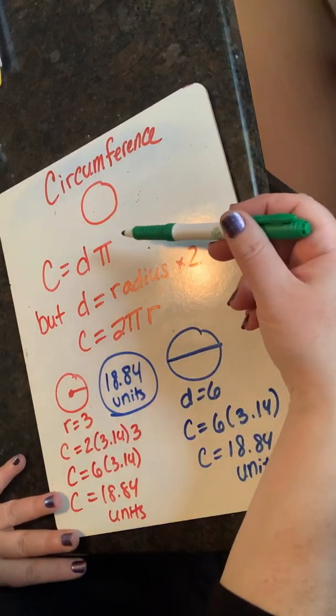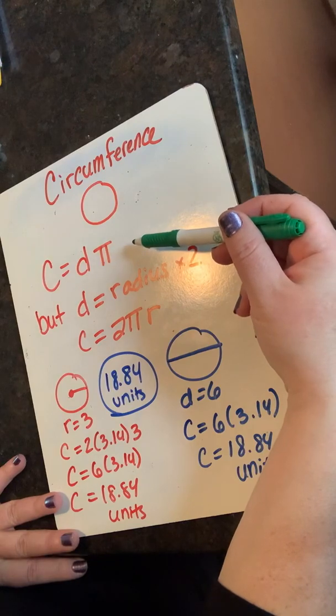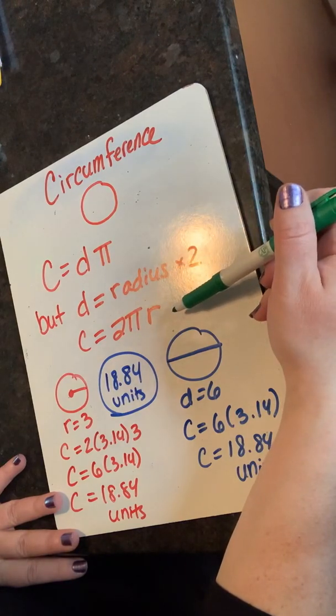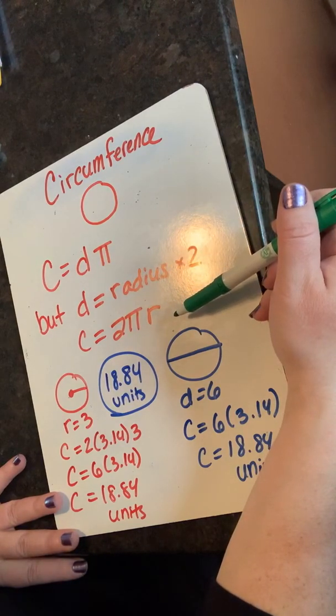So I can use the equation with diameter or the equation with radius to find the circumference around my circle.